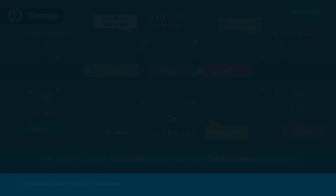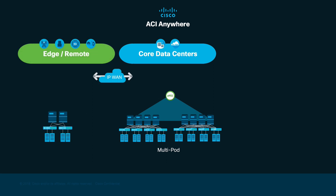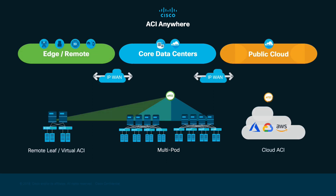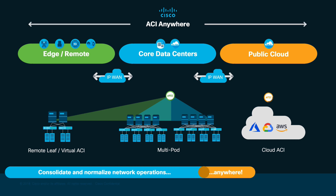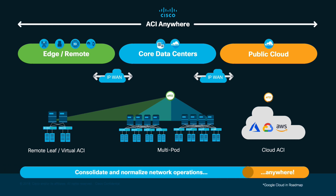With ACI Anywhere, you can run ACI in one or more pods, edge or remote locations, and clouds, even with no Cisco hardware, providing a consistent and automated network operations model.